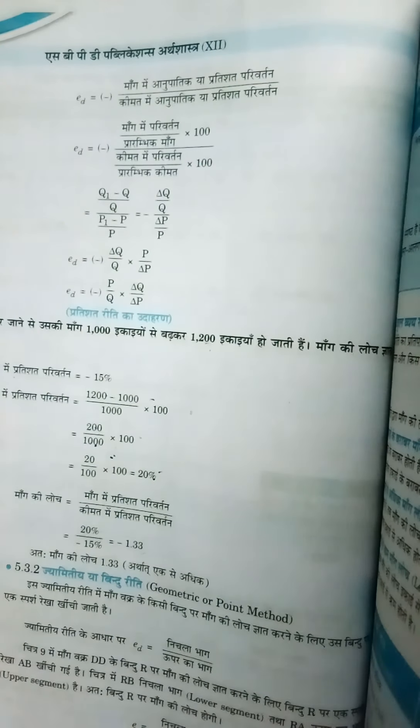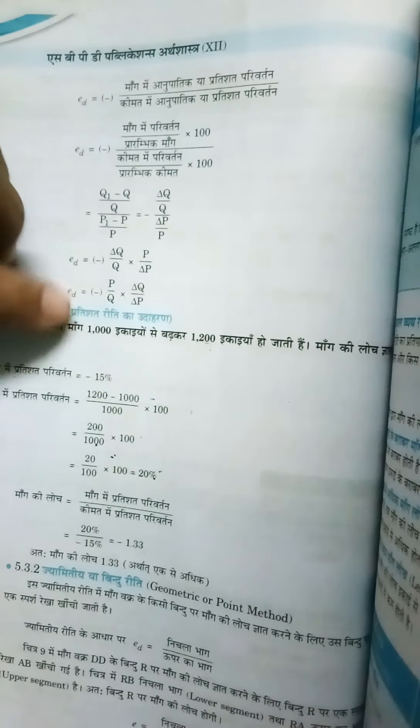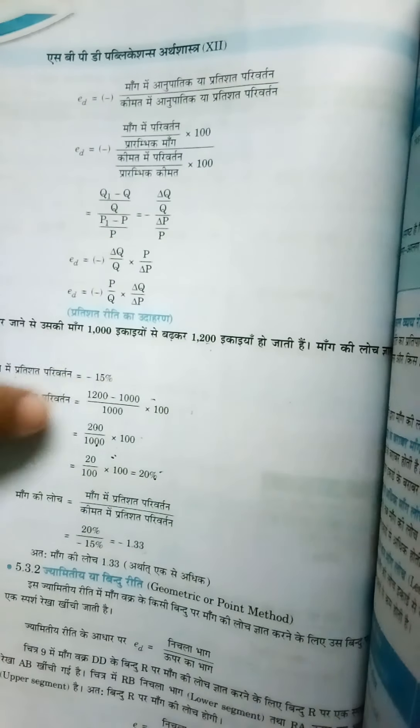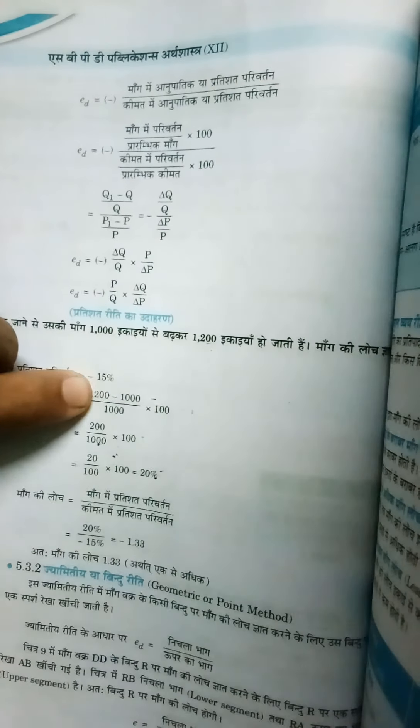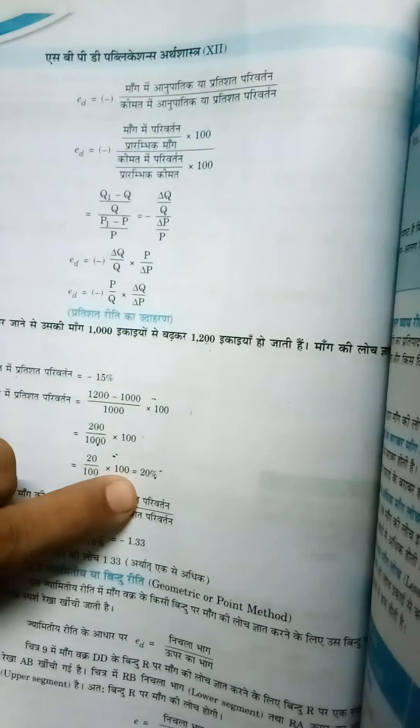When you cancel, 200 times 100 divided by 1000 gives you 20%. So percentage change in demand is 20%, and percentage change in price is minus 15%.